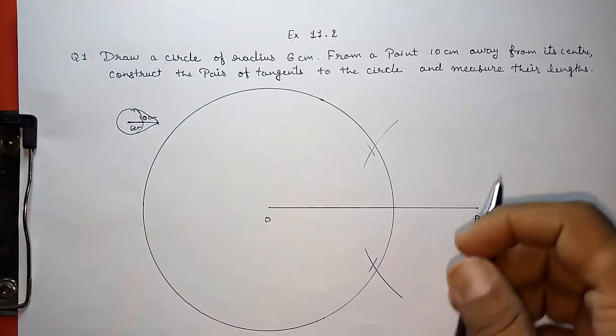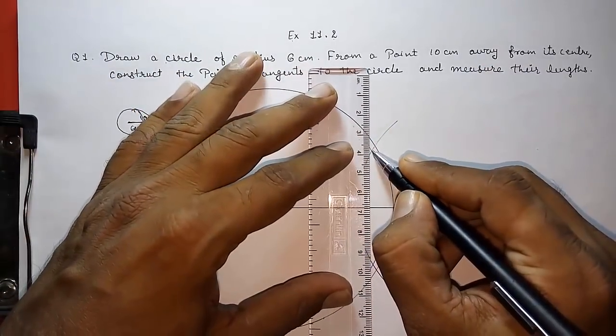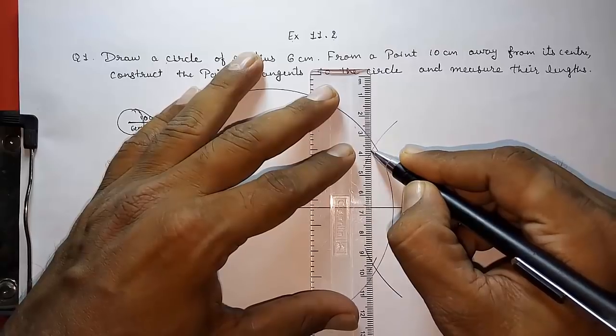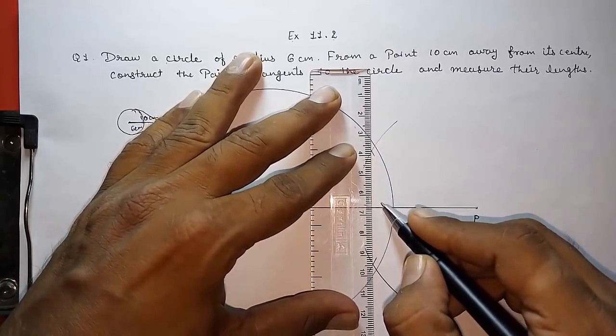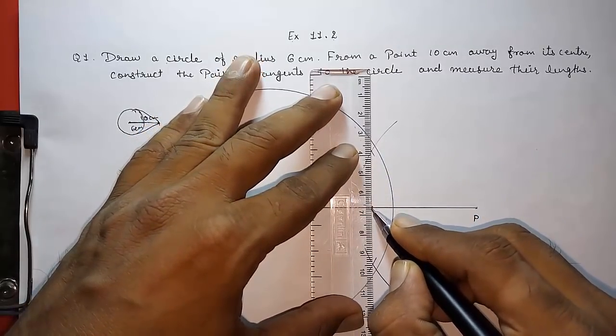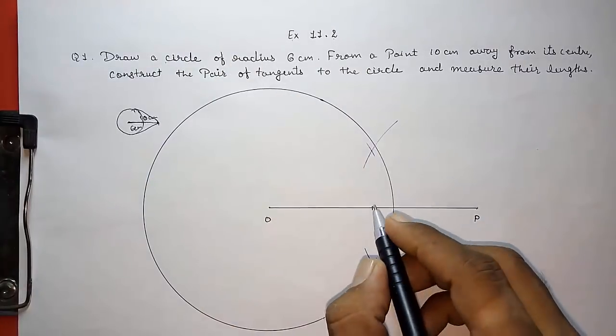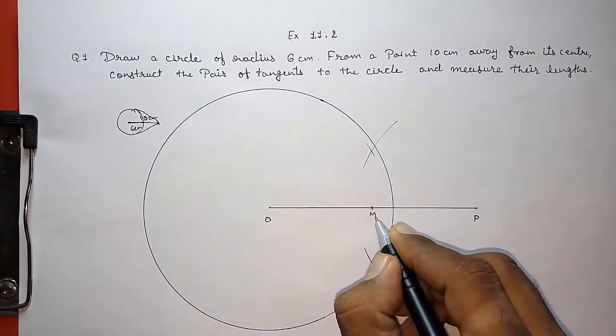Actually I am drawing perpendicular bisector. With the help of perpendicular bisector, we are getting the midpoints. Look here. This will be our perpendicular bisector. So I think this will be midpoint. Give that midpoint name M. Now this will be our center point of this circle.